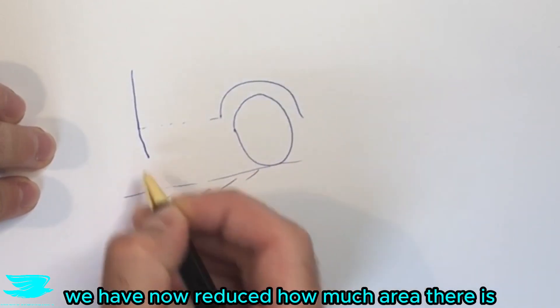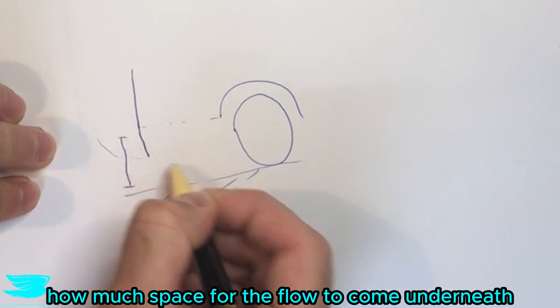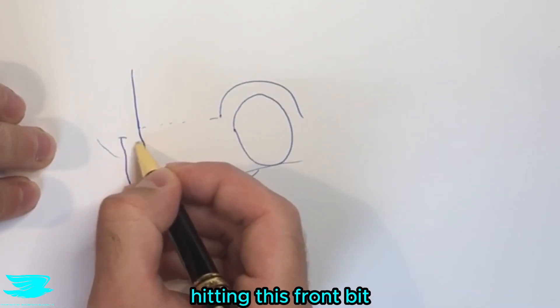we have now reduced how much area there is, how much space for the flow to come underneath and we actually get a lot of flow hitting this front bit.